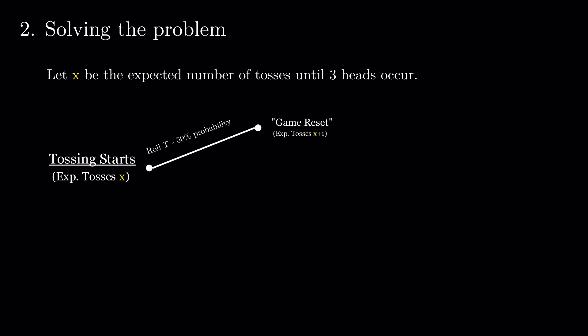We will call this situation a game reset. As such, from this point, we still expect to need the same number of tosses that are needed when starting from scratch. This implies that our expectation on this branch is x plus 1.